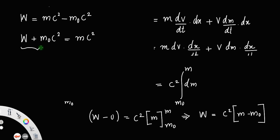Taking minus m₀c² to the left, you get W plus m₀c² equals mc². Here, m₀c² is the energy associated with the rest mass of the body, and W represents the work done — so their sum is the total energy E associated with the body. Therefore, E equals mc².